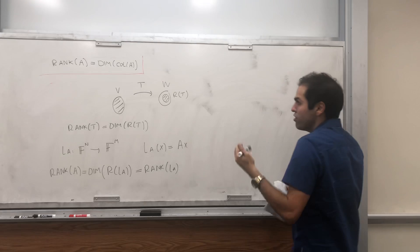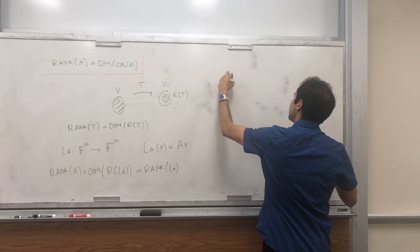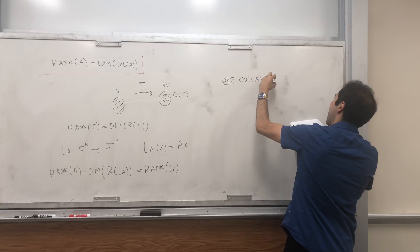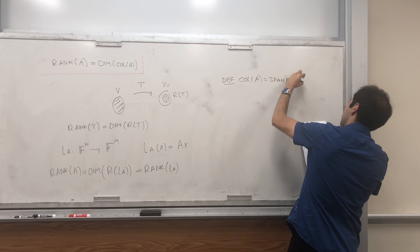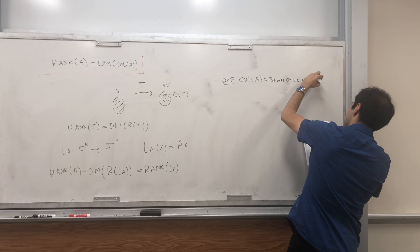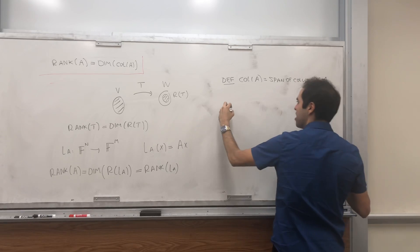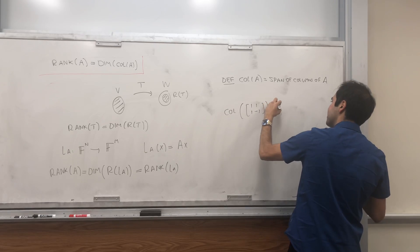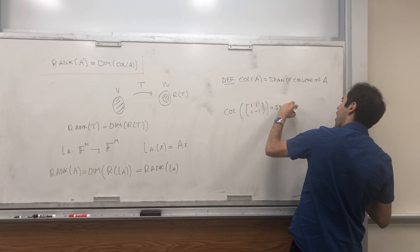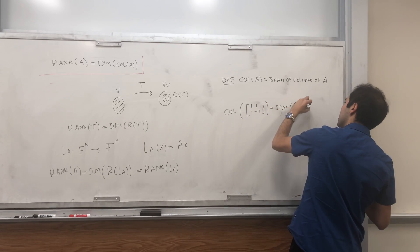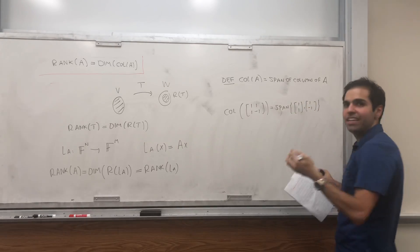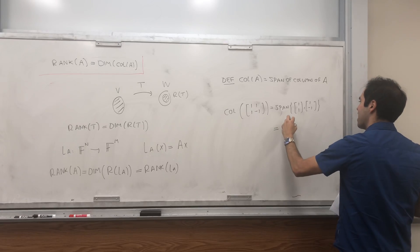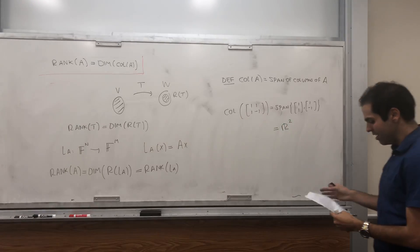Let me first remind you what the column space is. The column space of a is just the span of the columns of a. For example, the column space of the matrix [[1,1],[1,-1]] is the span of the vectors (1,1) and (1,-1), which is precisely all of R².